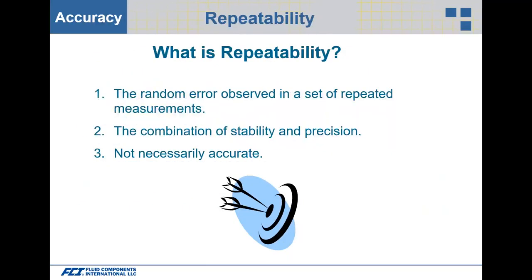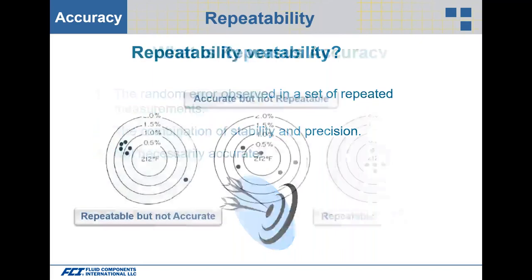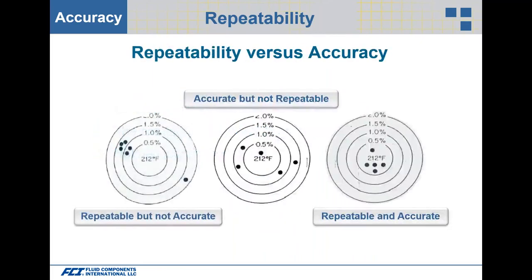What is repeatability? Repeatability is part of accuracy — the random error observed in a set of repeated measurements, the combination of stability and precision, not necessarily attributed to accuracy. Looking at repeatability versus accuracy: on the left-hand side you see dots that are relatively close together — we'd call that repeatable, but it's not accurate, because none of the dots are in the bullseye.